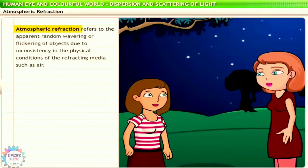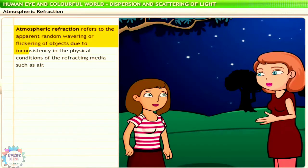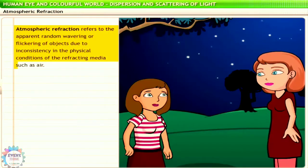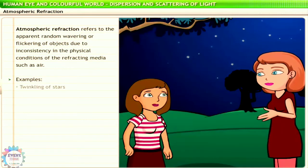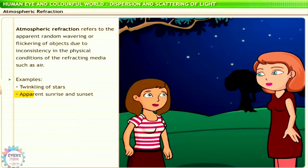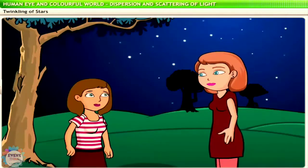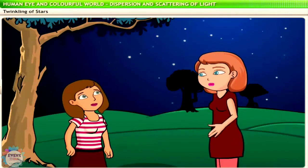Atmospheric refraction refers to the apparent random wavering or flickering of objects due to inconsistency in the physical conditions of the refracting media, such as air. In fact, atmospheric refraction can explain twinkling of stars as well as apparent sunrise and sunset.